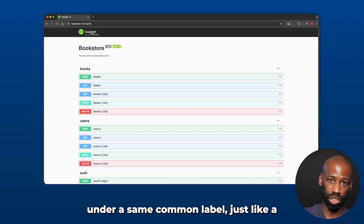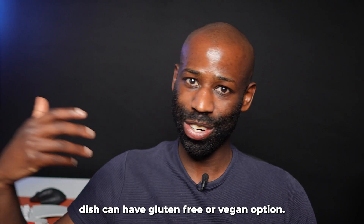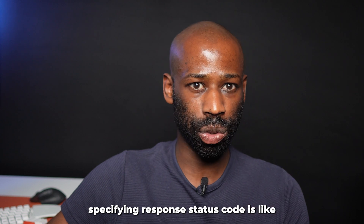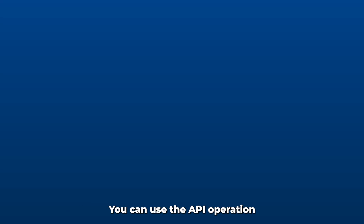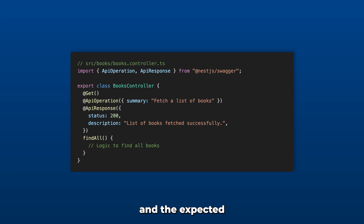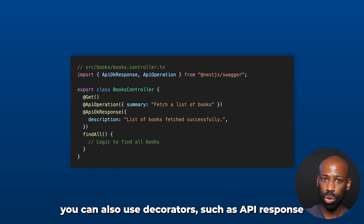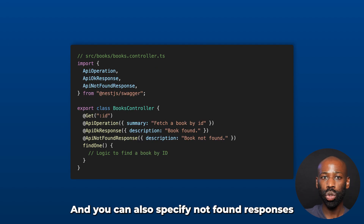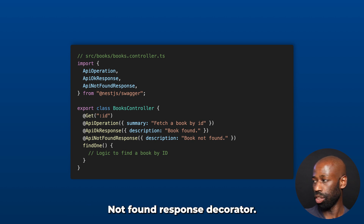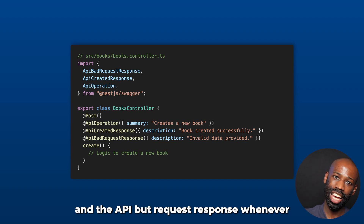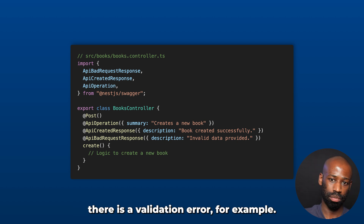ApiTags helps organize related endpoints under a common label. Just like a dish can have a gluten-free or vegan option, each endpoint can have a different response status code. Specifying response status codes is like setting expectations with your API consumers. You can use the ApiOperation and ApiResponse decorators to describe the operation and expected response status code. Instead of manually specifying the status code, you can also use decorators such as ApiOkResponse for 200 responses, ApiNotFoundResponse for 404s, ApiCreatedResponse, and ApiBadRequestResponse for validation errors.